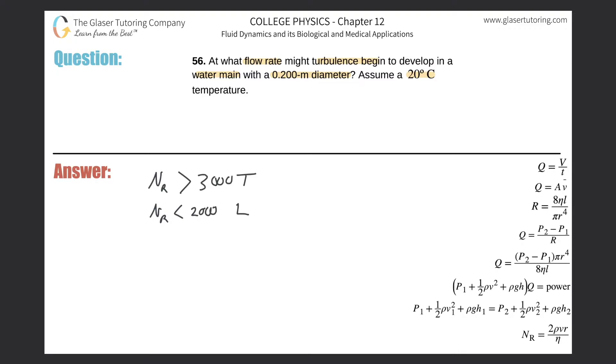Some books also say it's greater than 4,000, so there is some variability to these values. Any case, we know that in order to classify something as turbulent, we need a Reynolds number greater than 3,000. So I'm going to start with my Reynolds number formula.